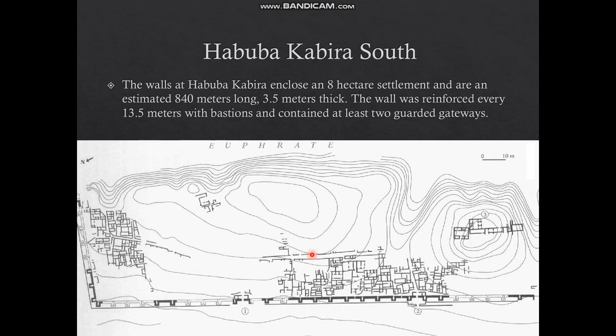Habuba Kabira South is built with an extensive fortification complex. Multiple streets and alleyways run through the city, which is built on a plan. It's surrounded by an 840-meter-long wall almost four meters thick, reinforced every 14 meters by bastions — towers extending out from the wall — and contains two guarded gateways. Whoever built Habuba Kabira and sites like Jebel Arruda were concerned about safety, either protecting control of resources from exterior communities in the indigenous periphery, or concerned about retribution from the Uruk state itself. Either way, this defensive fortification is incredibly important.